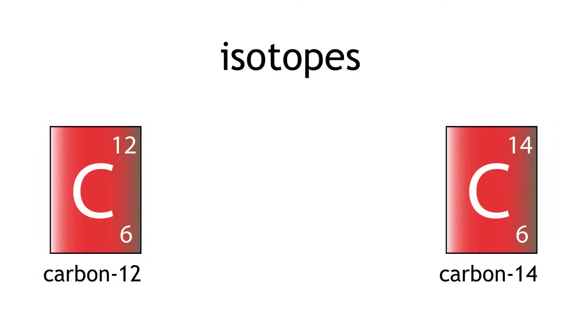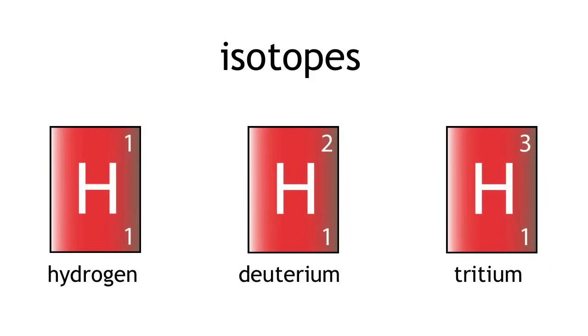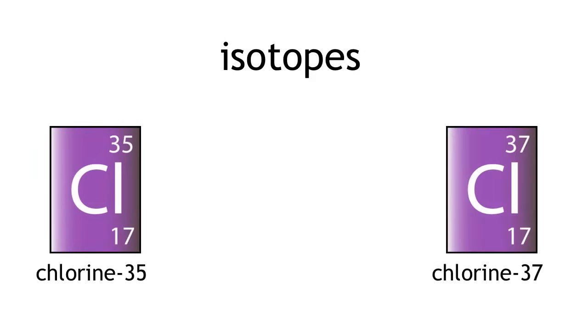Carbon-12 and carbon-14 are not the only examples of isotopes. There are many more such as hydrogen, deuterium, and chlorine-35 and chlorine-37.